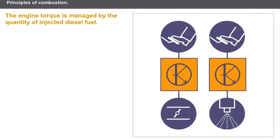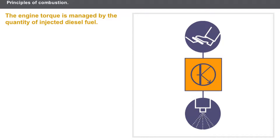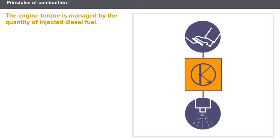In contrast to a petrol engine, the diesel engine has no throttle valve. On a diesel engine, the engine torque is managed by the quantity of injected diesel fuel. When a request for more torque is made, the quantity of diesel fuel injected increases. When a request for less torque is made, the quantity of diesel fuel injected is reduced.